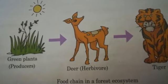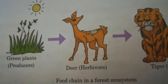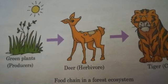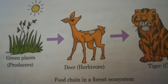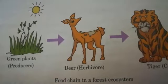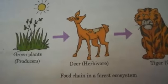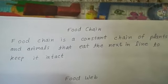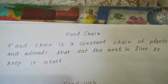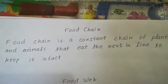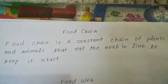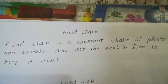Here — green plant, deer, and tiger. Deer is dependent on green plants for food, and deer is food for tiger. So they are dependent on each other for food, forming a food chain in a forest — a food chain in the forest ecosystem. If the question is asked, what is a food chain? A food chain is a constant chain of plants and animals that eat the next in line to keep it intact. We have understood this through the pictures of the aquatic food chain and forest food chain.